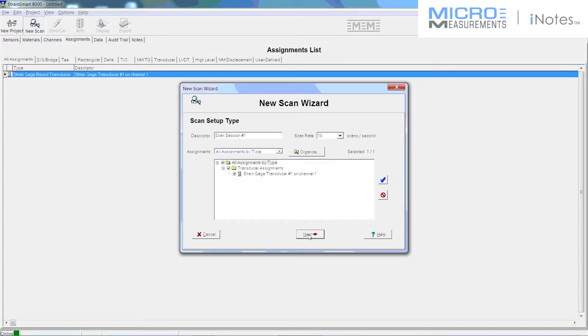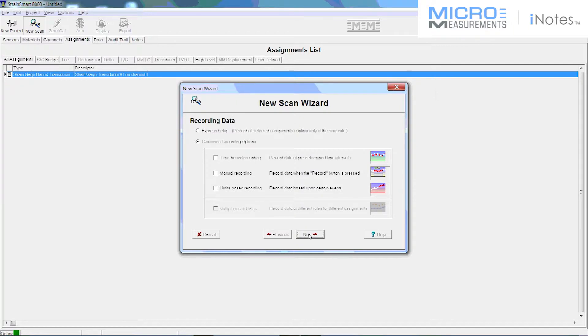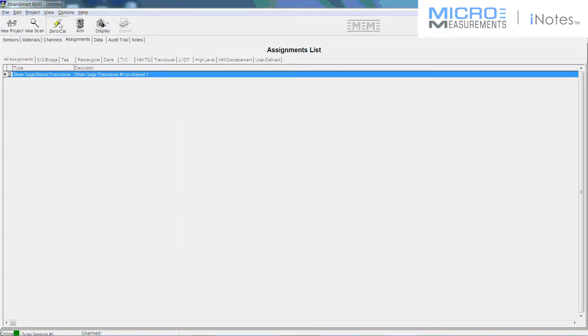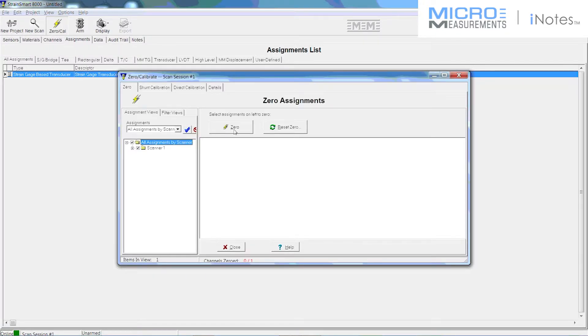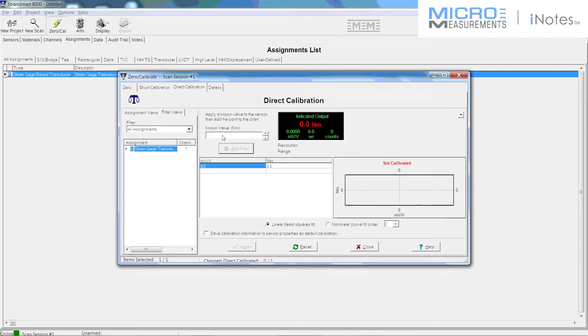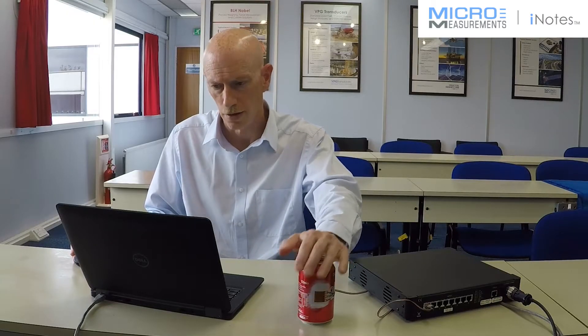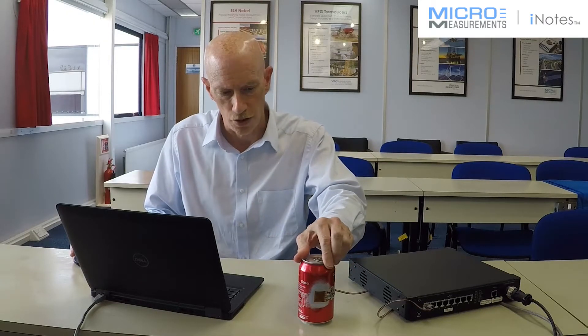I'm going to create a new scan. Scan rate of 10 samples per second. And record at 10 samples per second. Now I'm going to zero and calibrate. So zero just takes out any initial offset from the transducer. Now direct calibration is the part I'm really interested in. I can put in a known input to my transducer. Let's say I'm going to input 20 Newton meters.